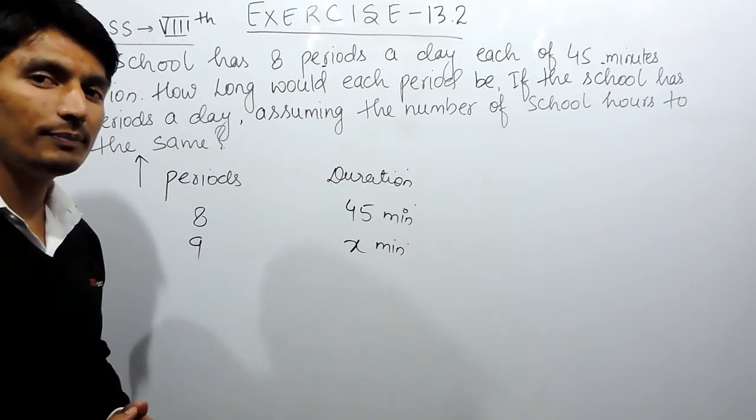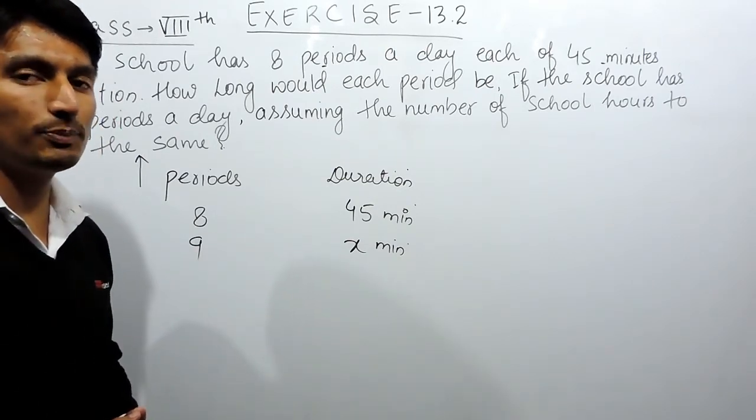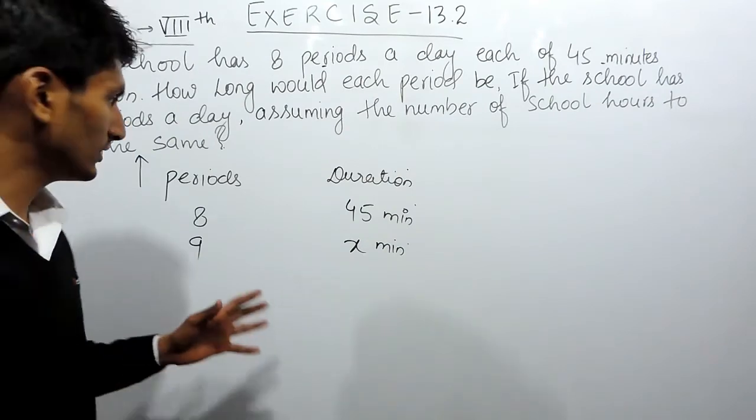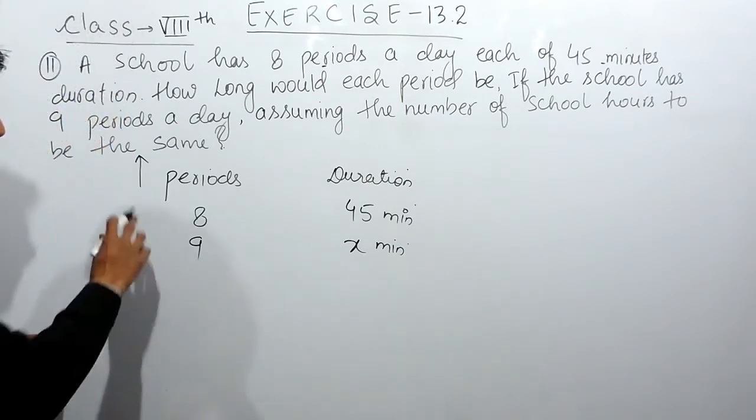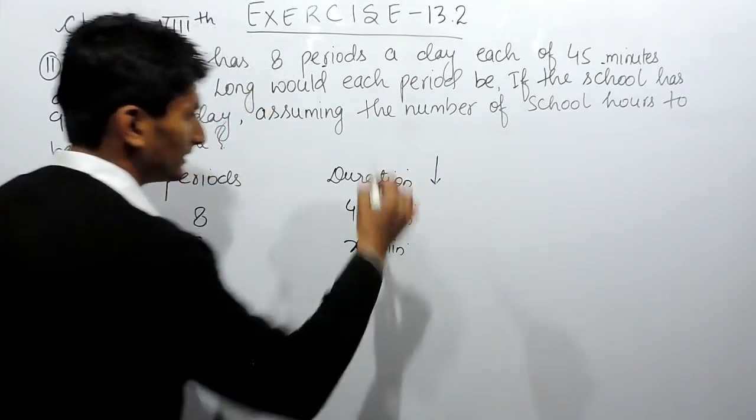If you have less number of periods, the time duration given to each period will be more. So this is a case of inverse proportion. When the number of periods are increased, the time duration is decreased.